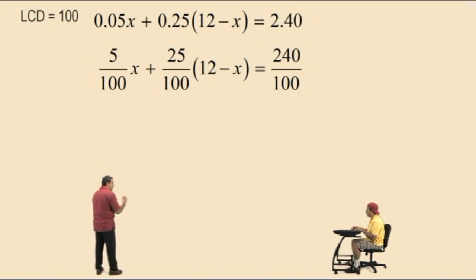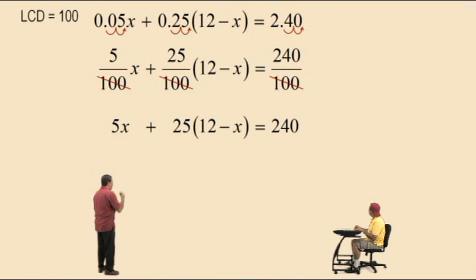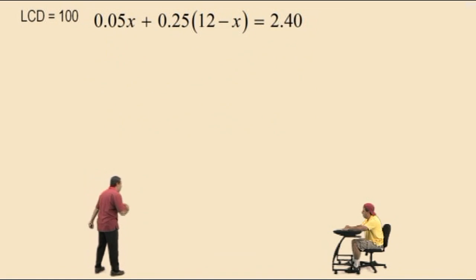Now, what happens when you multiply a decimal by a hundred? It moves to the right. It moves the decimals two places to the right, correct? And so if you multiply each term by a hundred, the decimals move two places to the right. If you multiply each of these fractions by a hundred, those denominators get cancelled out, right? And so either way, you'll end up with the equation 5x plus 25 times 12 subtract x equals 240. That's the Kung Fu fraction technique or Kung Fu decimal technique, right? So anyway, let's go through the steps. You'll see. I'm going to go step by step here.